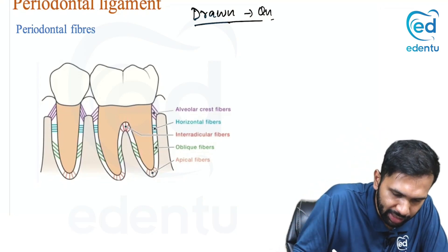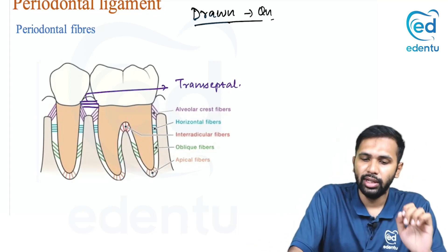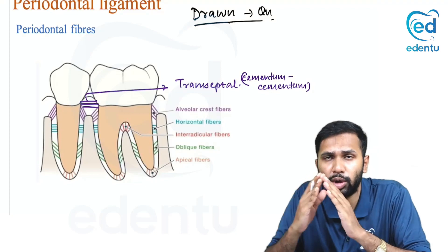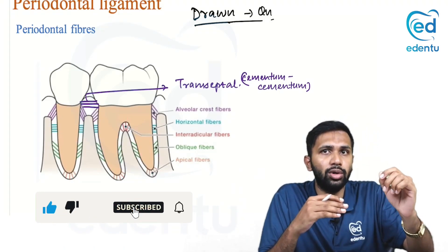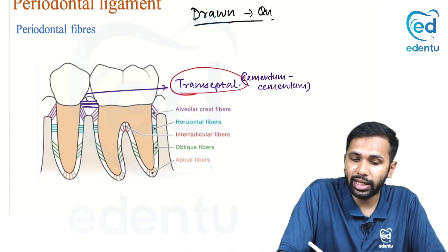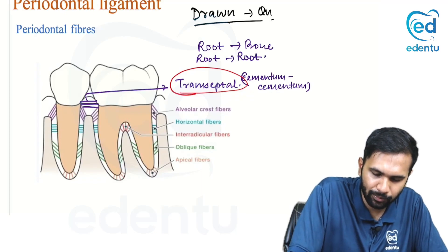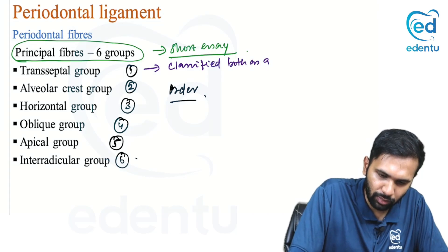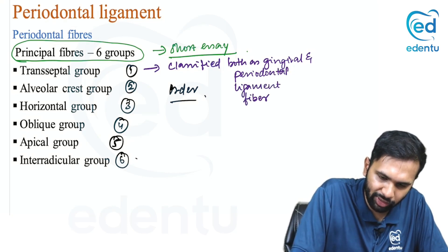The transeptal group of fibers runs from the cementum of one tooth to the cementum of the adjacent tooth. This is a peculiar group because the definition of periodontal ligament states it connects root cementum to alveolar bone — but transeptal fibers are an exception: they don't connect root to bone but connect one root to the adjacent tooth's root. That is why transeptal fibers are classified both as a gingival fiber and a periodontal ligament fiber.